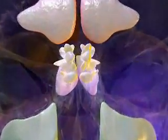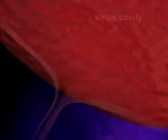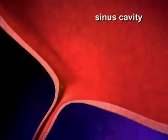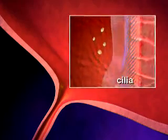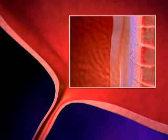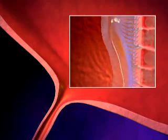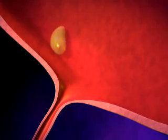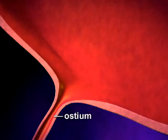Sometimes foreign particles get past the cilia of the nose and enter one of the four sinus cavities. The sinuses are also equipped with cilia that push mucus and particles out of the sinus cavities. The sinuses then drain into the nose through a hairpin-shaped tube called the ostium.